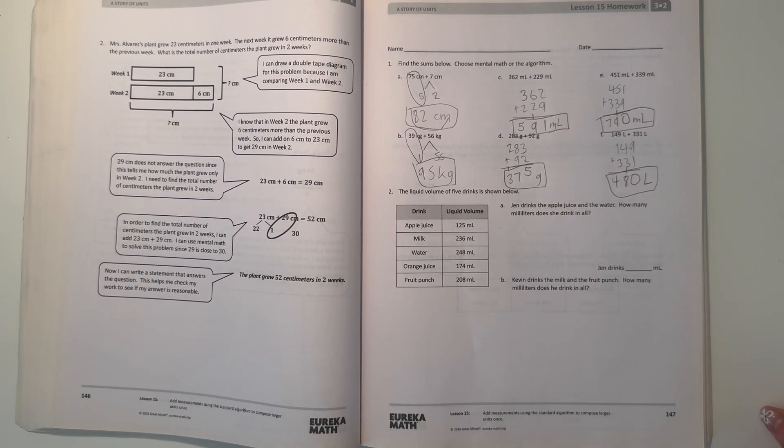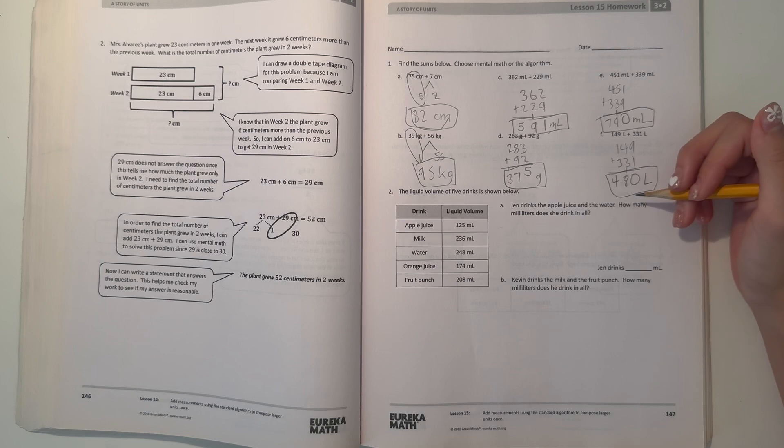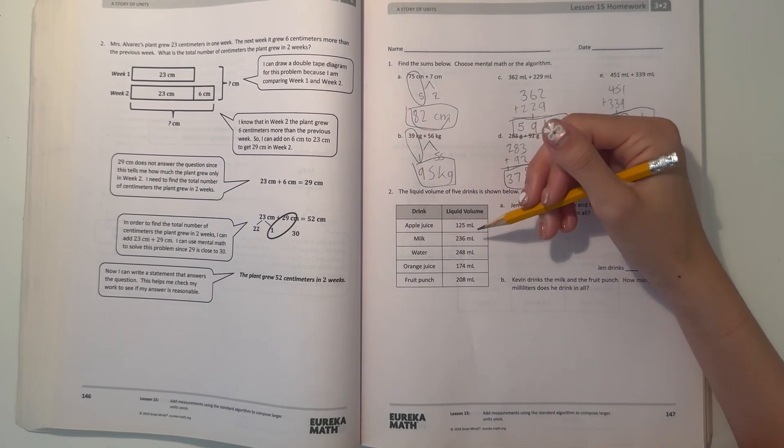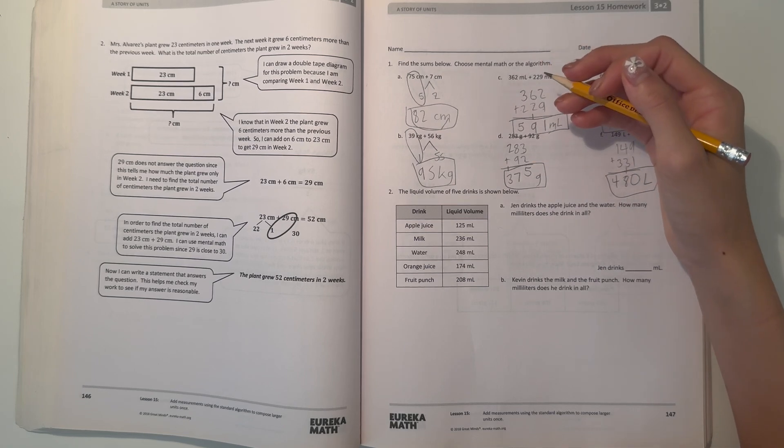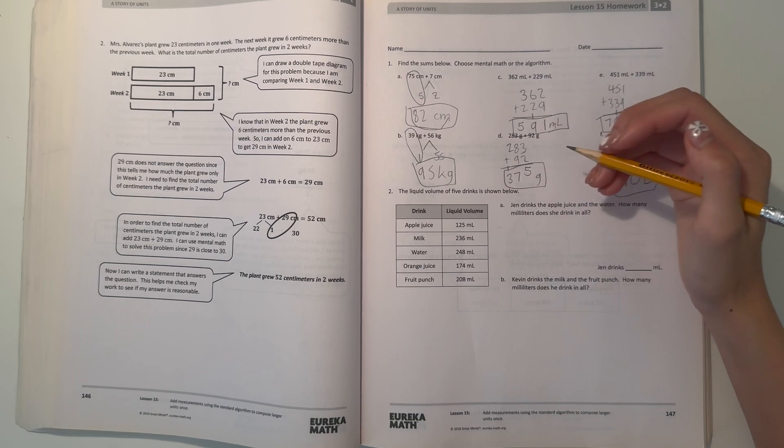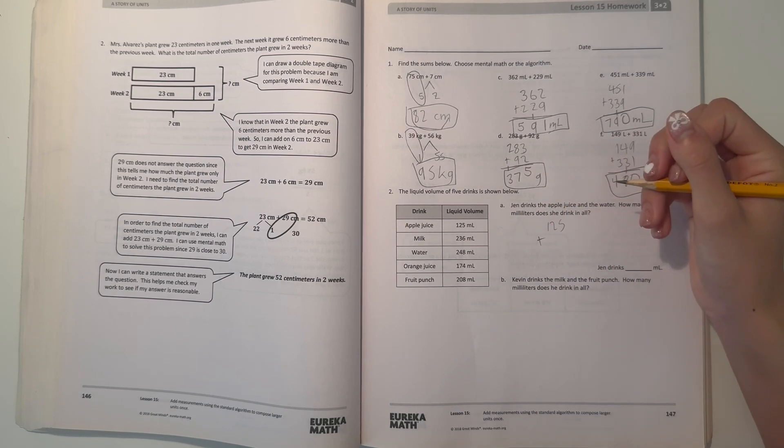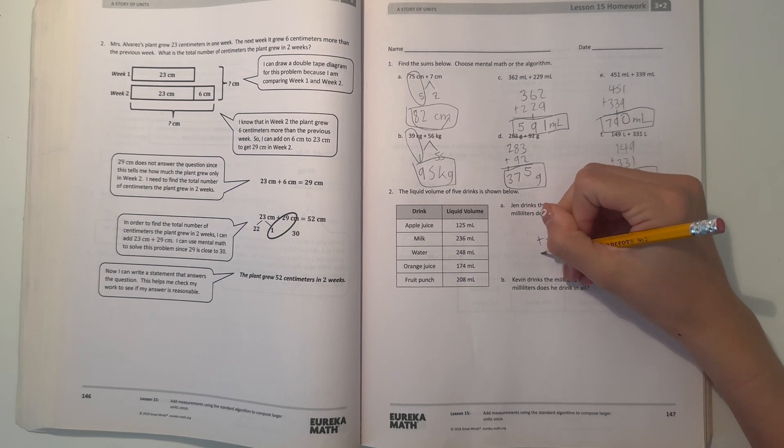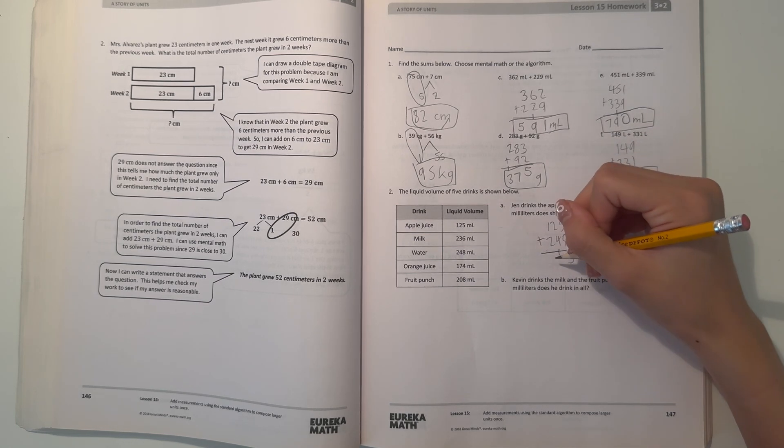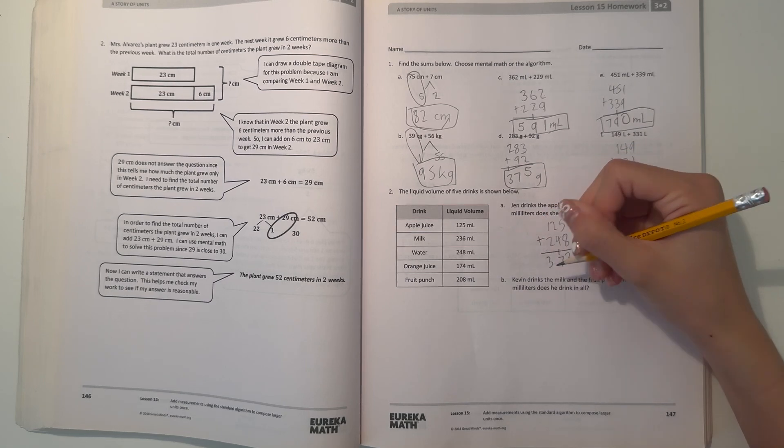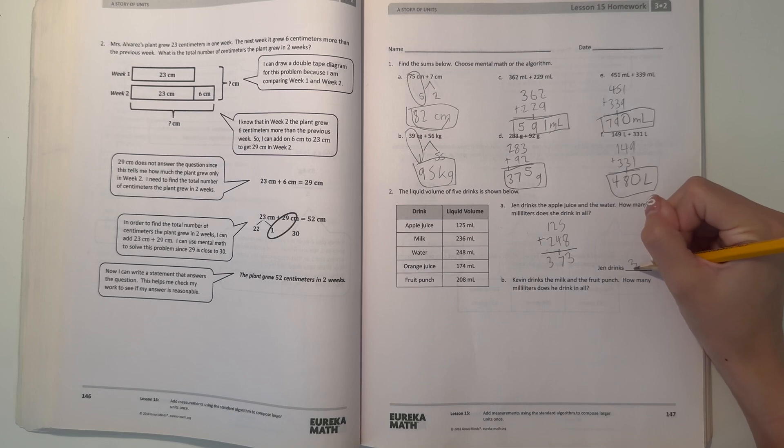Number two, the liquid volume of five drinks is shown below. Part A: Jen drinks the apple juice and the water. How many milliliters does she drink in all? Apple juice is 125 milliliters and the water is 248. Let's add up the liquid volume. 5 plus 8 is 13, so we carry the 1. 2 plus 4 is 6, plus 1 is 7, and 1 plus 2 is 3. So 125 plus 248 equals 373. Jen drinks 373 milliliters.